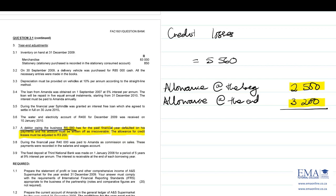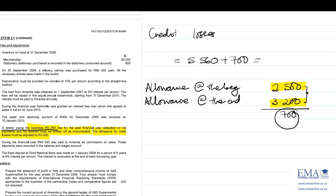This increase in the allowance for credit losses is triggered by previous credit losses — it's bad for the entity. The difference between 3,200 and 2,500 is 700. We were initially planning to lose 2,500, but now we are planning that we can lose 3,200, so our credit losses have increased by 700. Recording credit losses: 5,560 plus 700.